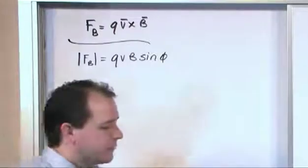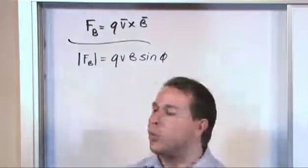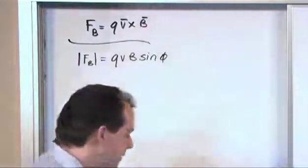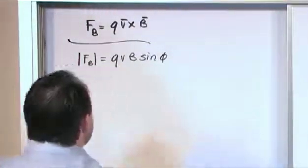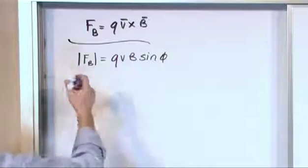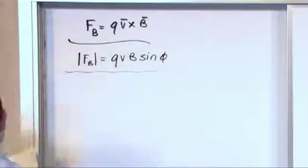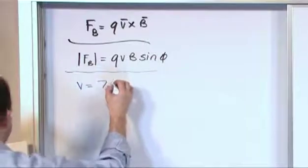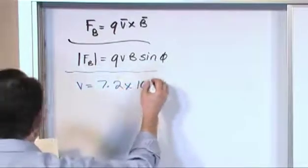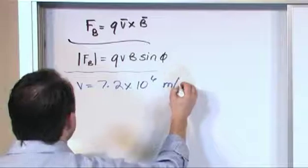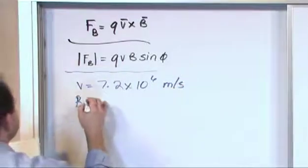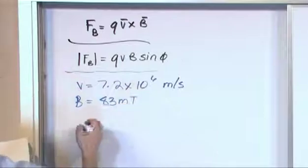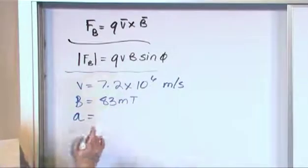The problem is, the problem doesn't actually tell us what the force of this magnetic field is exerting. We don't know that. So let's see what we do know. Let's write that down, because it's very helpful to do that. The velocity is 7.2 times 10 to the 6 meters per second. The magnetic field strength is 83 milliteslas. The acceleration, we're not sure how we're going to use that yet.